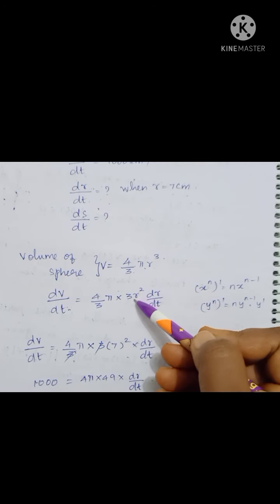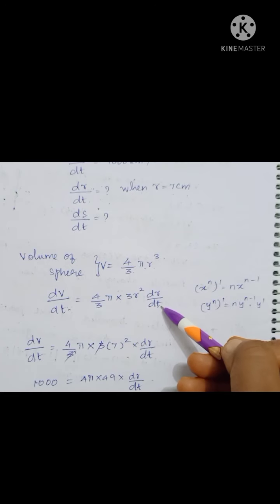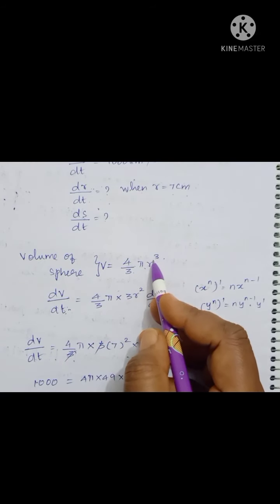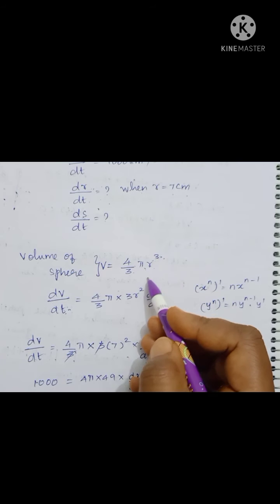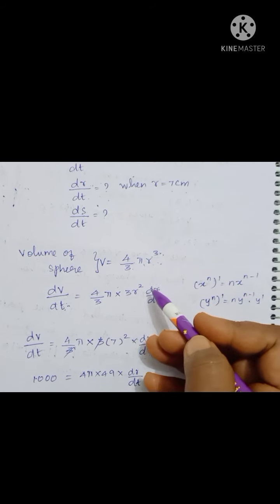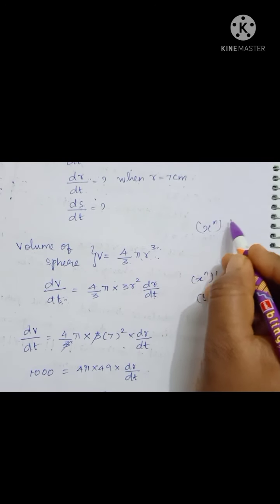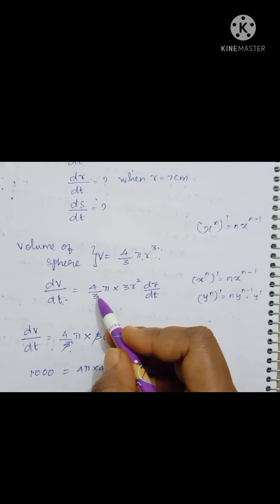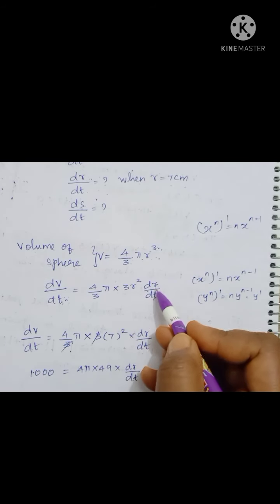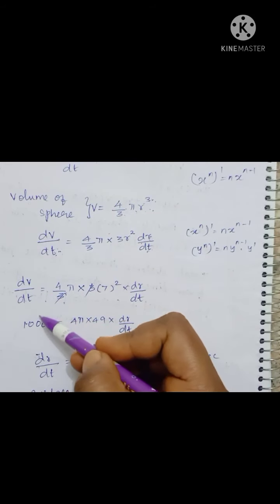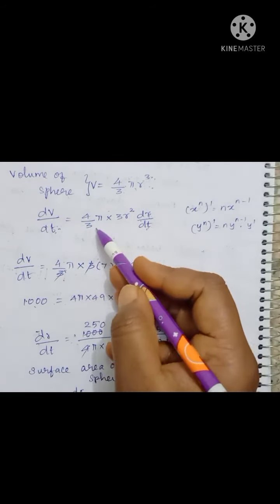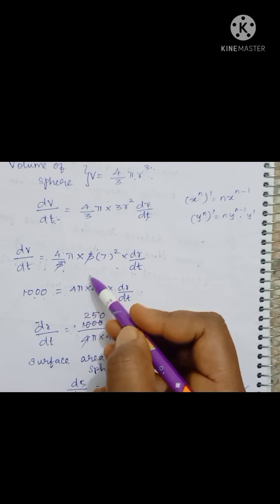Now there is r³ and we have to differentiate: 3 into r power 2. Again r is a function of t, so we apply dr/dt. Since dV/dr involves 3r², but this variable is t. The formula is x^n, so n into x^(n-1). Using the chain rule — so 4/3 π, applying x^n format: 3 into r^(3-1) = r², then dr/dt. Substituting: dV/dt = 1000, so 4/3 · π · 3 · r² · dr/dt. The 3s cancel, giving 1000 = 4π · r²· dr/dt. With r = 7, 7² = 49.